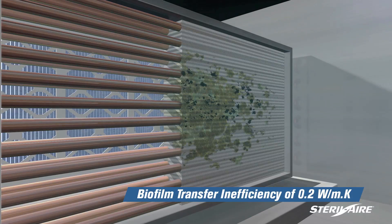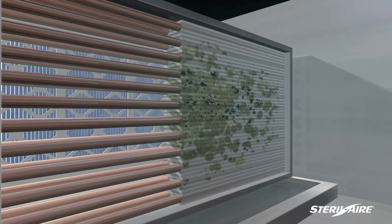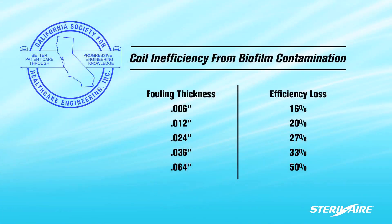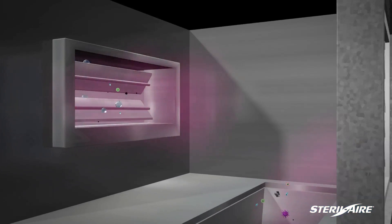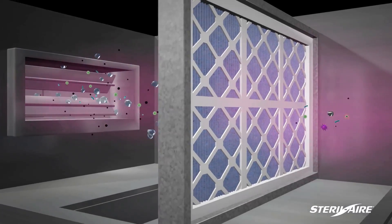or approximately 1,000 times less efficient. According to the California Society for Healthcare Engineering, it only requires a 1.5 millimeter fouling on the coil fins, 0.006 of an inch, to reduce the coil's efficiency by 16%.